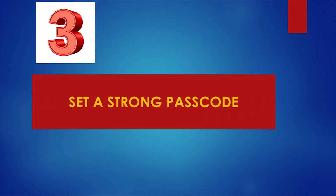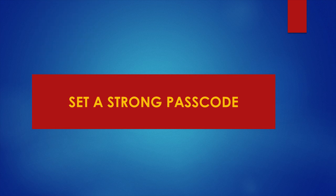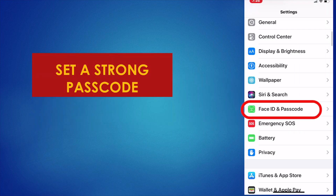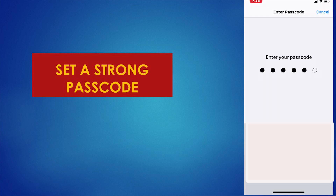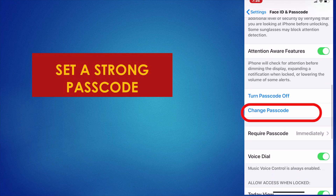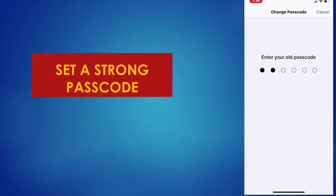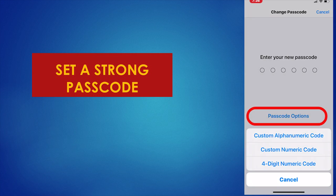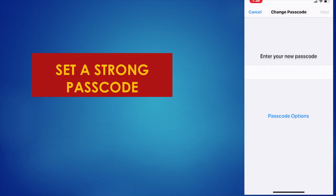The third countermeasure is to set a stronger passcode. You can now set an alphanumeric password, not just digits. To do so, go to Settings, then Face ID and Passcode, enter your current passcode, scroll down to Change Passcode, enter your current one again, click on Passcode Options, and select Custom Alphanumeric Passcode. Now you are able to enter any letters, characters, and special characters.